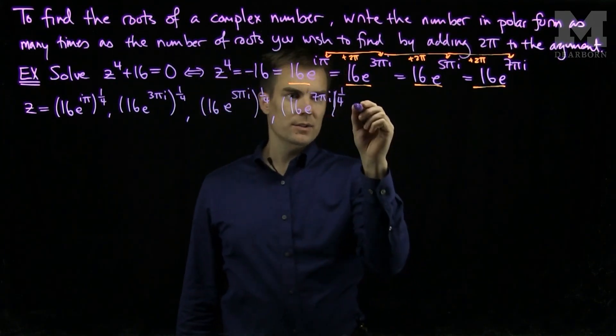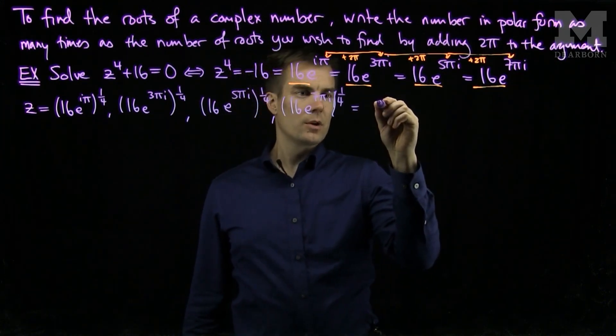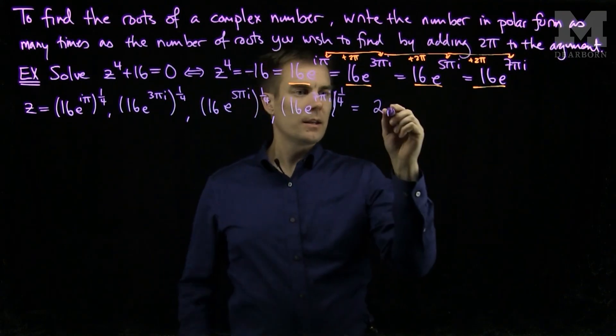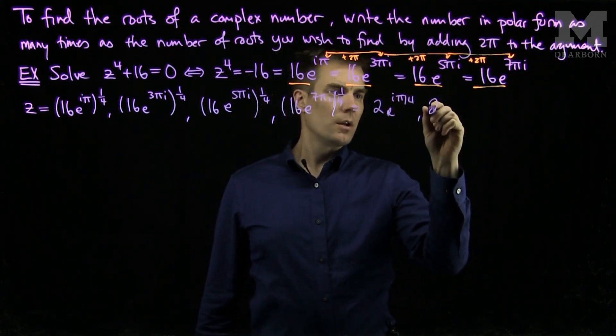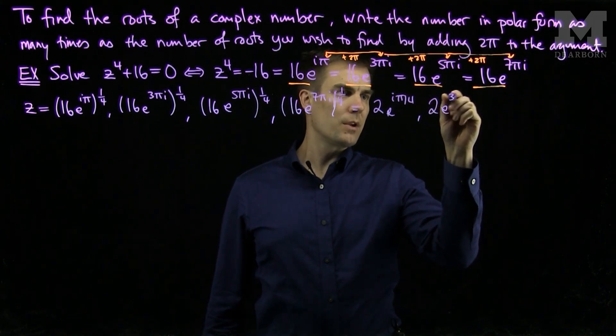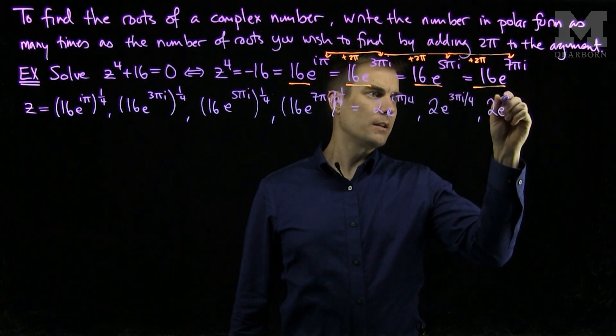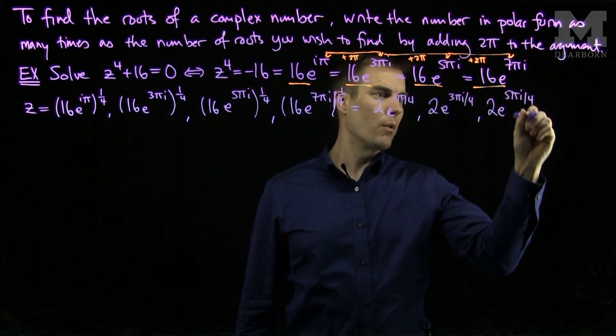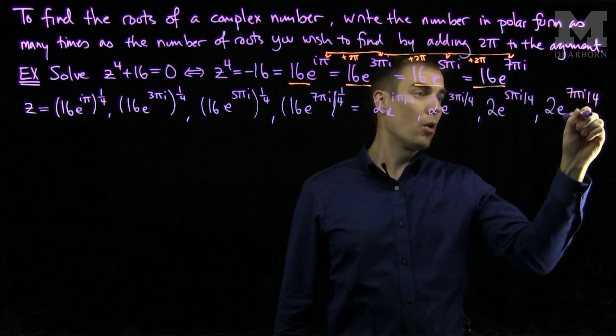Simplifying this, we see that the 4th root of 16 is 2. So I will have 2e to the iπ over 4, 2e to the 3πi over 4, 2e to the 5πi over 4, and 2e to the 7πi over 4.